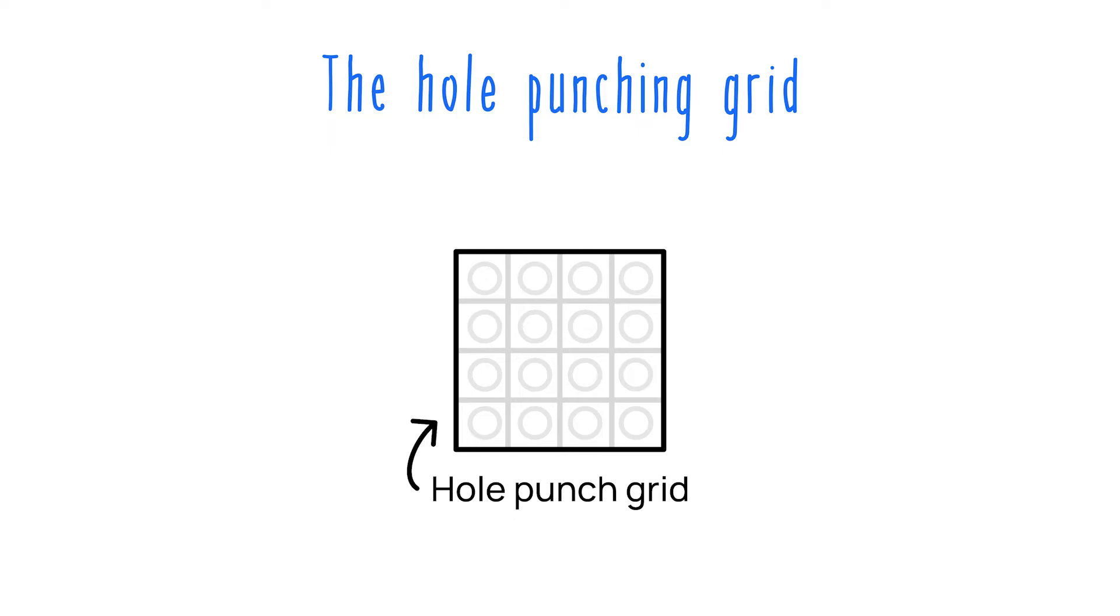To better understand where holes will end up, it's really important to get familiar with the hole punching grid. This grid makes it easier because we know that our hole punches will always line up with one of these circles. So holes, no matter where they're folded from, will end up in one of these pre-established positions. This makes it a lot easier to track holes.